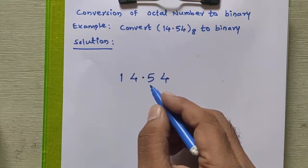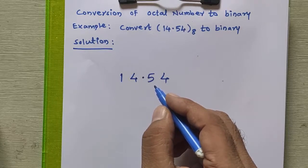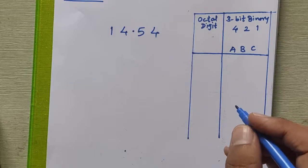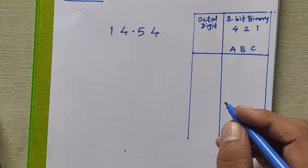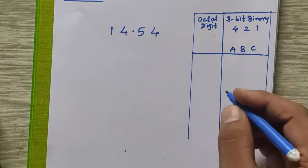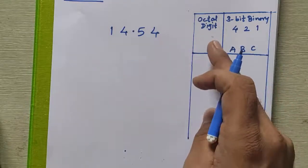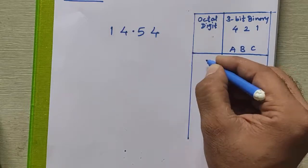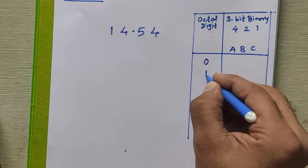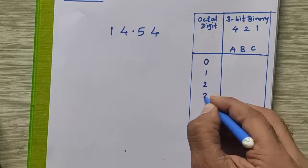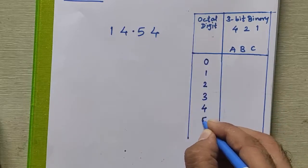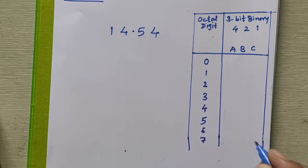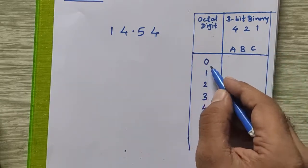We will see how to get the three-bit binary equivalent for each and every octal digit. As we know, in the octal number system there are eight valid digits, from zero to seven. I have prepared a table of octal digits and their three-bit binary equivalents. I'll write all the valid digits of the octal number system here: 0, 1, 2, 3, 4, 5, 6, and 7.